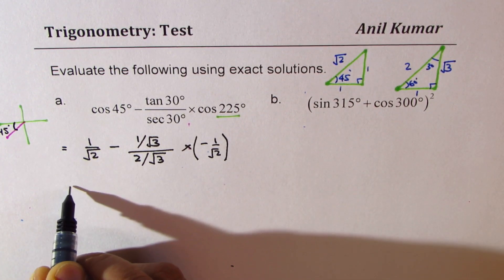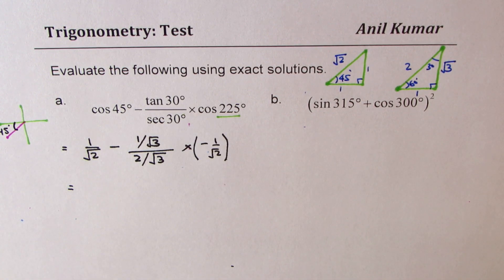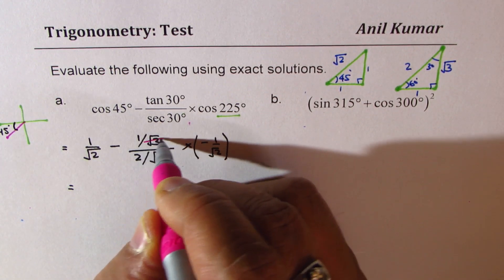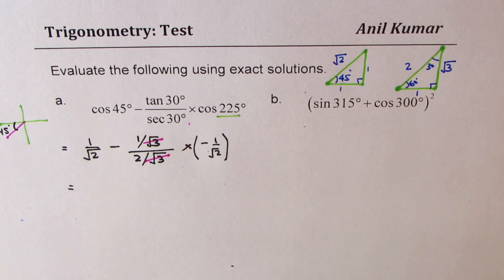So these are the values for the given trigonometric ratios. Now we can cancel this square root 3, square root 3 in the denominator.